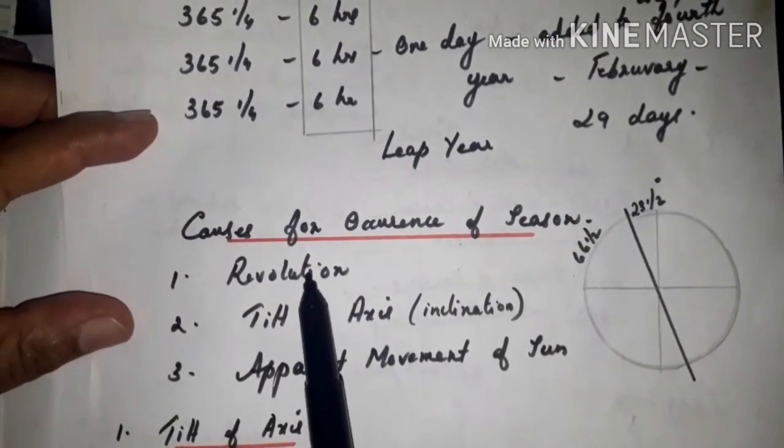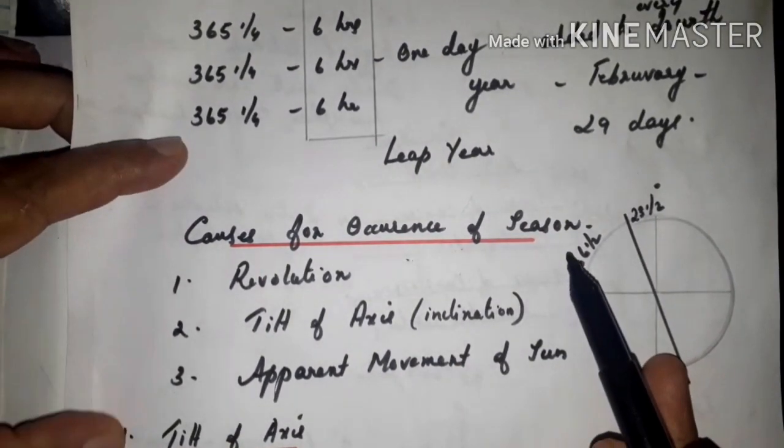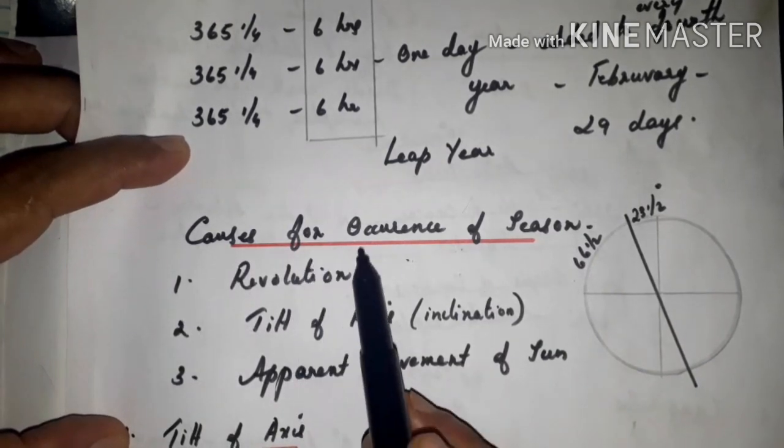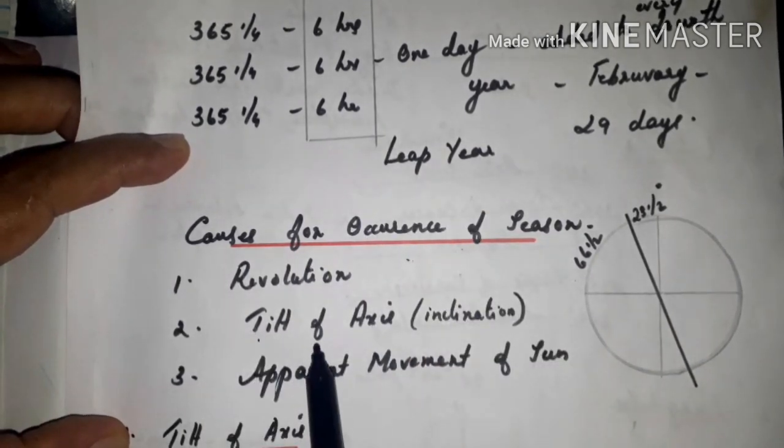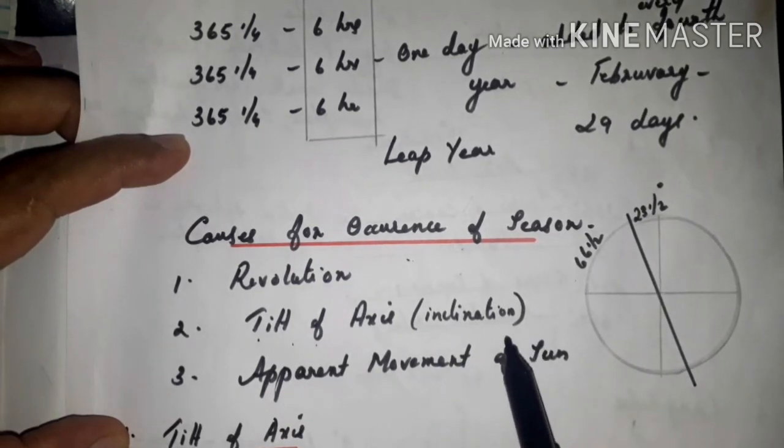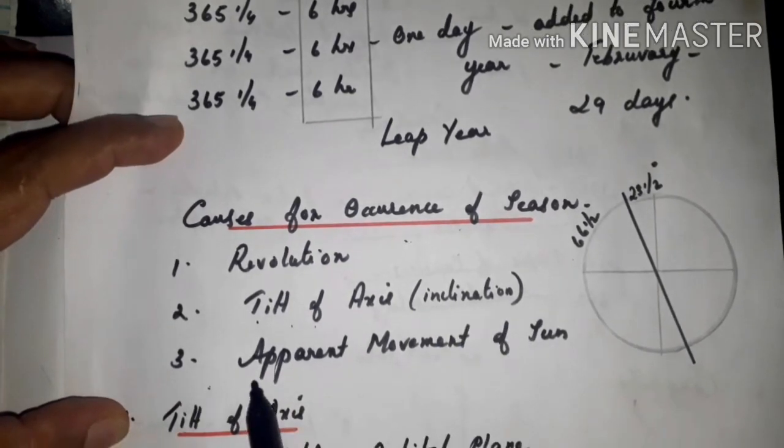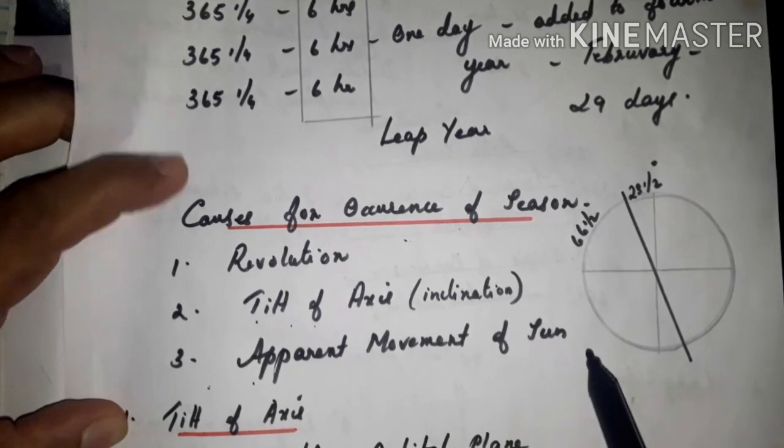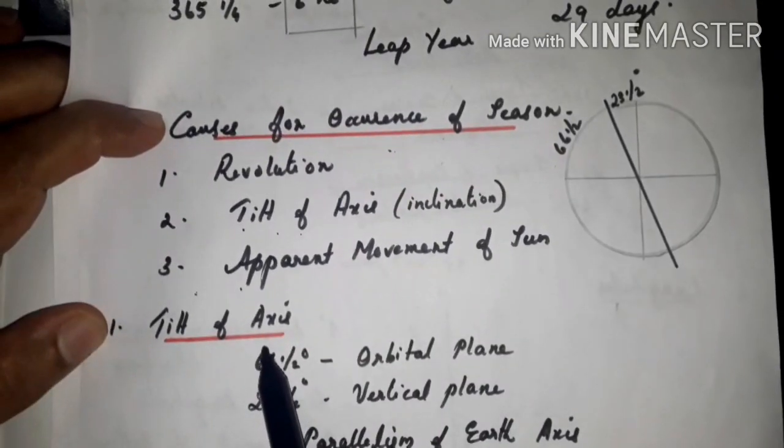Now let us study about the causes of the occurrence of seasons. First one, you studied revolution. Next one is tilt of axis, tilt or inclination. And the third one, apparent movement of sun.